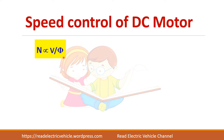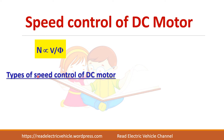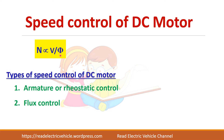So you have two different techniques. One is called armature or rheostatic control, where by varying the voltage we can vary the speed of the motor. Another one is the flux control or field control, where you will control the flux and change the speed of the motor. So let us see about these two speed control techniques for both shunt motor as well as series motor.